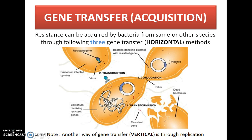The next mechanism is gene transfer or acquisition. This kind of resistance is acquired from the same bacterial species or from another bacterial species. There are two types of gene transfer in bacteria: horizontal gene transfer and vertical gene transfer. Vertical gene transfer occurs through replication of bacteria. We will focus on resistance-based horizontal gene transfer.